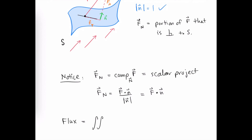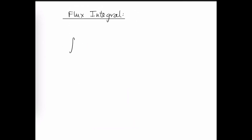This is a loose explanation of why the flux integral is determined by adding up infinitely many of those normal components over the entire surface. The flux integral has a notation F dot dS, but this is simply a shorthand for the surface integral over S calculated by taking the dot product of F dot the normal vector and then integrating over that surface.